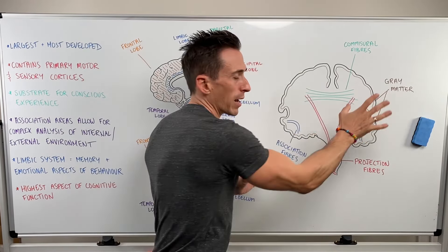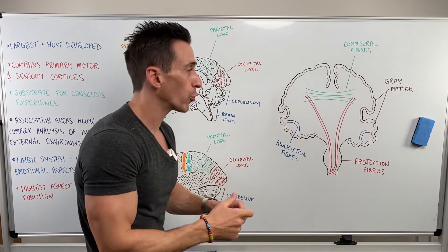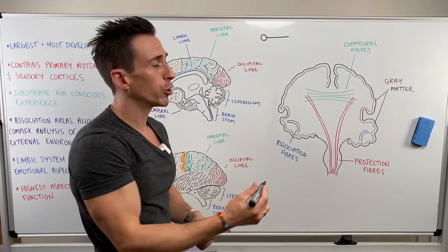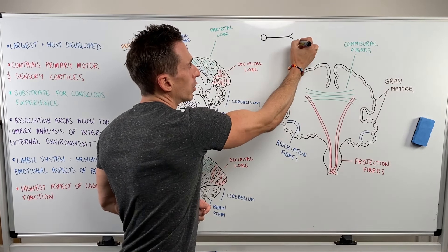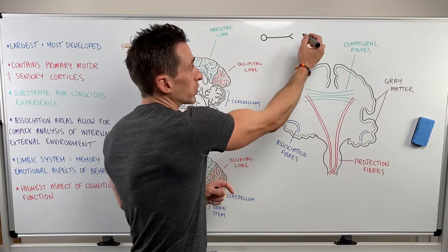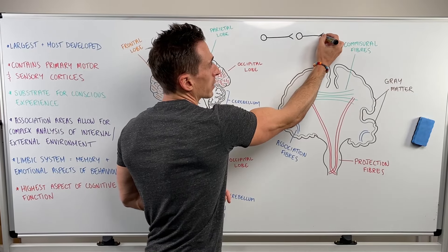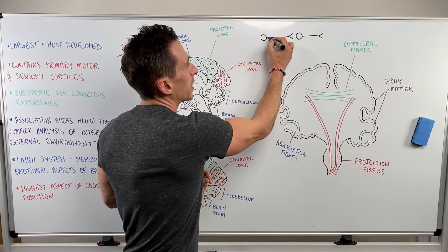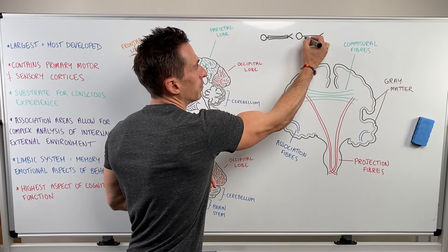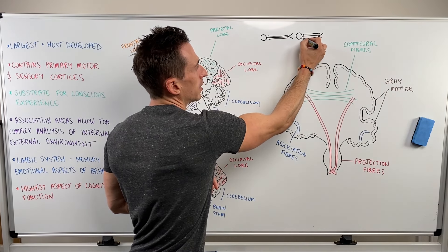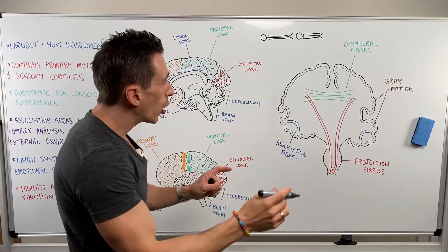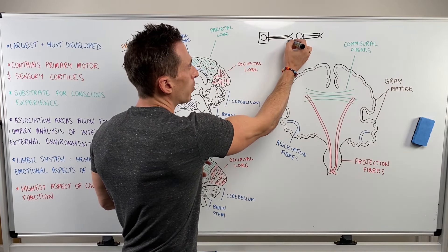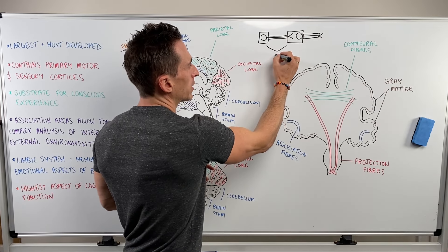It contains gray matter. When we look at a neuron, you're going to have the cell body, the axon, and then the axon terminals — the axon terminal likely talking to another neuron. Importantly, the axon is surrounded by fat, myelin, and fat looks white. So when we look at gray matter, gray matter refers to the cell bodies and the areas of synapsing.